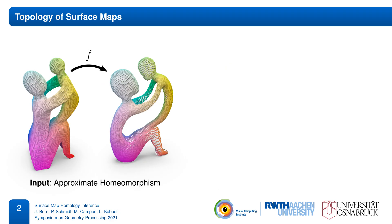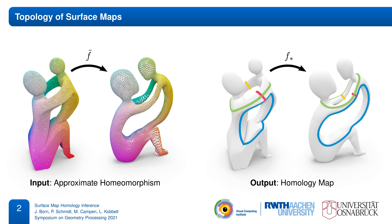Given some approximate input map, we robustly infer a purely topological map description in the form of a so-called homology map. It encodes the map topology by describing how equivalence classes of cycles are mapped from one surface to the other. Our inference is robust to many types of map defects such as noise, gaps, outliers, or non-injectivities, and always produces a description of a valid homeomorphism.